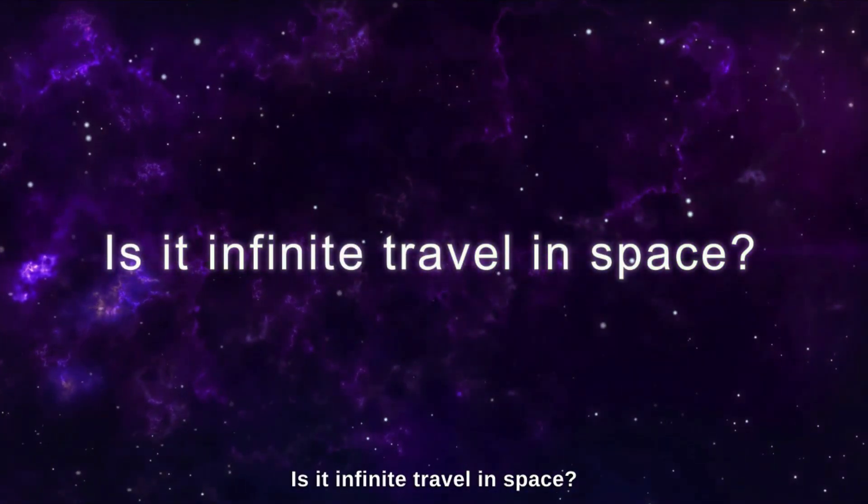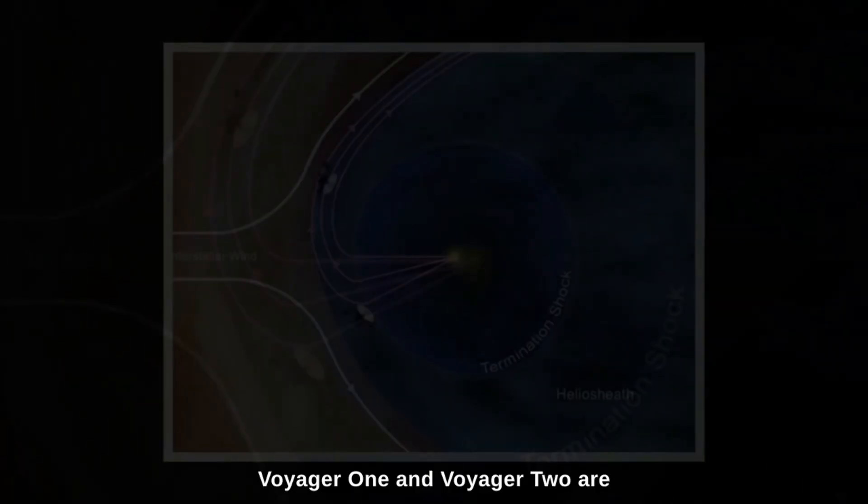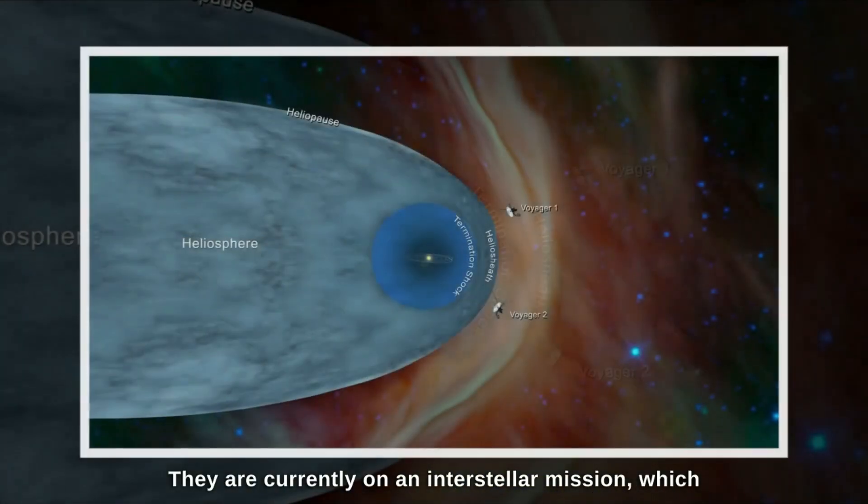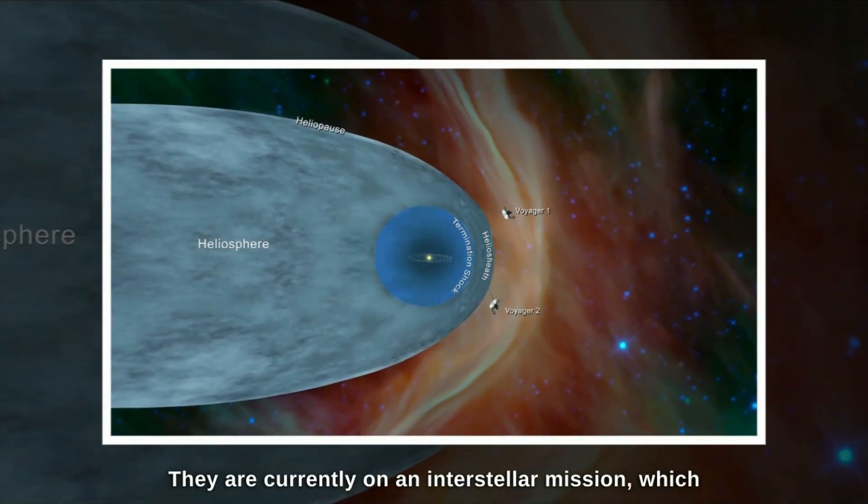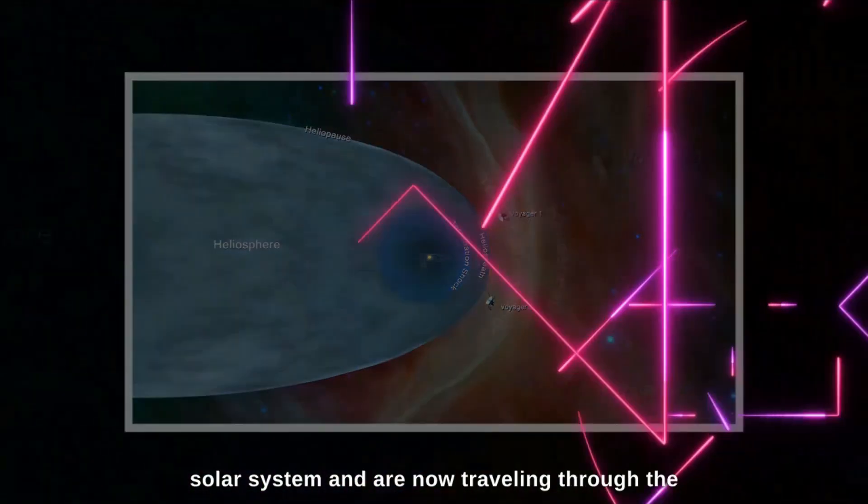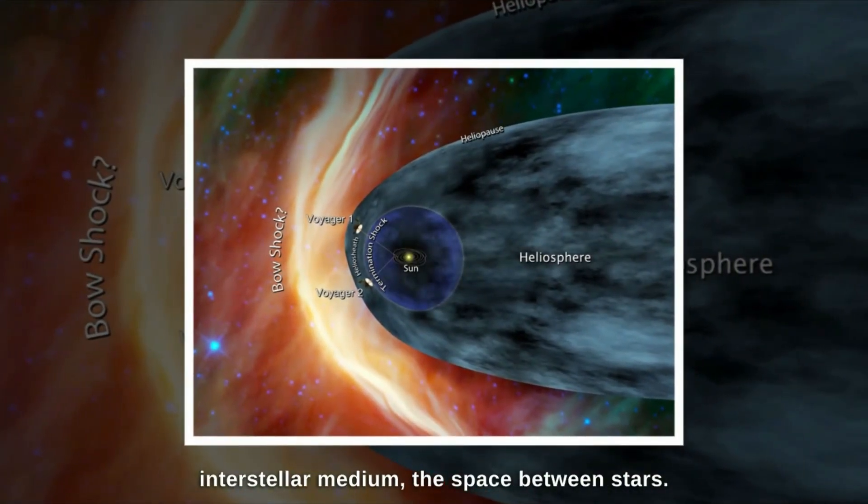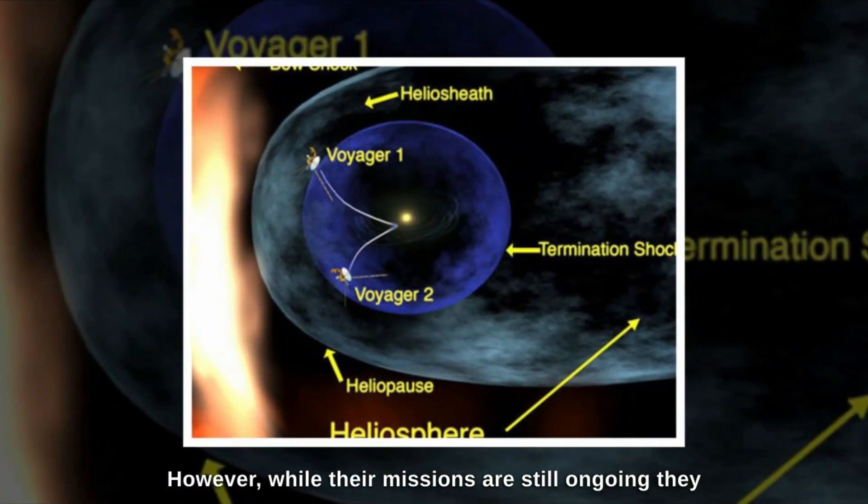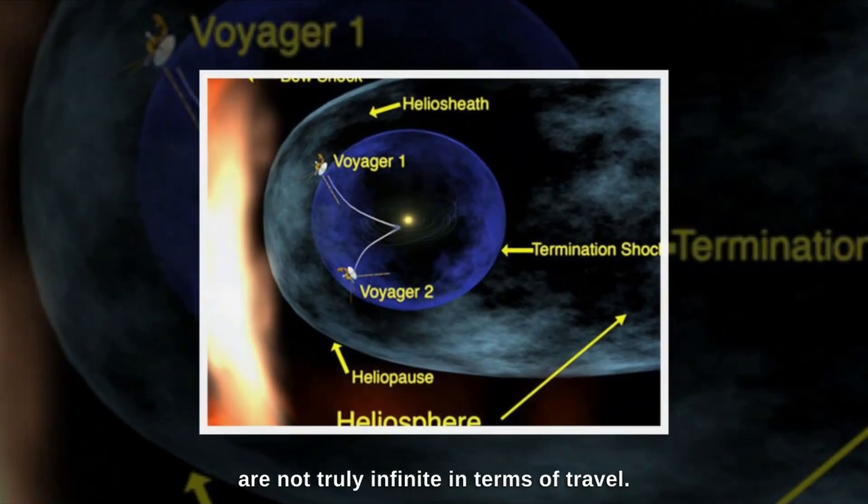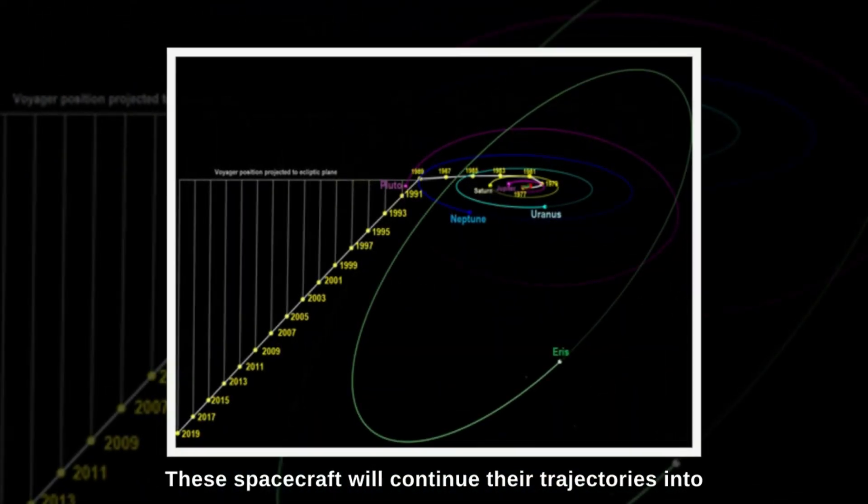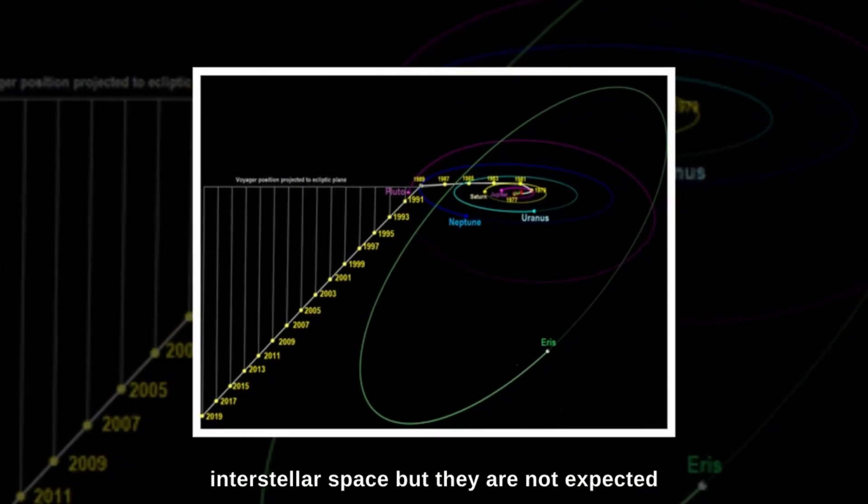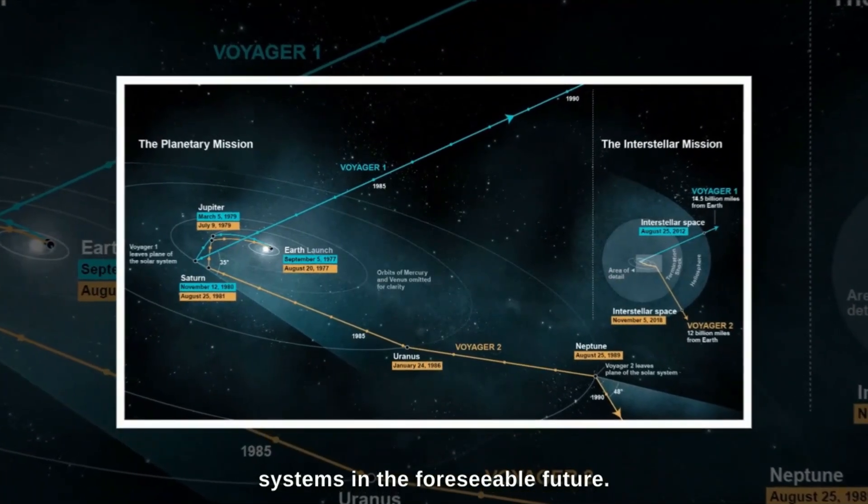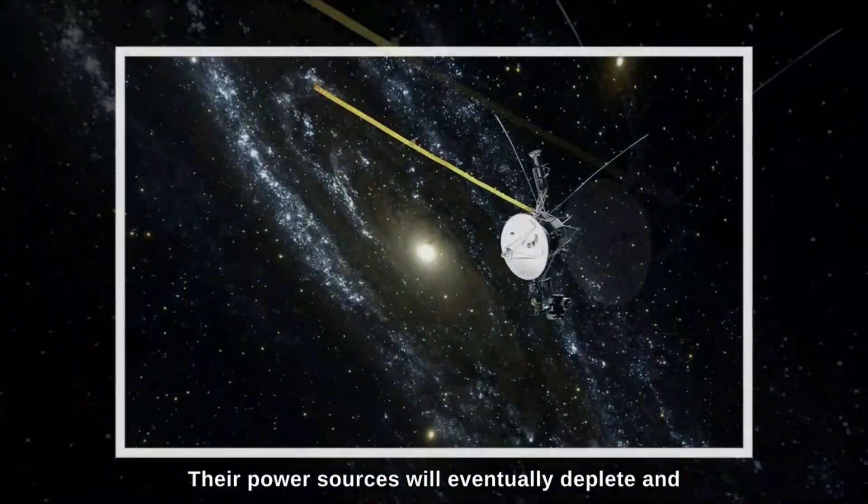Is it infinite travel in space? Voyager 1 and Voyager 2 are not traveling infinitely through space. They are currently on an interstellar mission, which means they have crossed the boundary of our solar system and are now traveling through the interstellar medium, the space between stars. However, while their missions are still ongoing, they are not truly infinite in terms of travel. These spacecraft will continue their trajectories into interstellar space, but they are not expected to encounter any other stars or planetary systems in the foreseeable future.